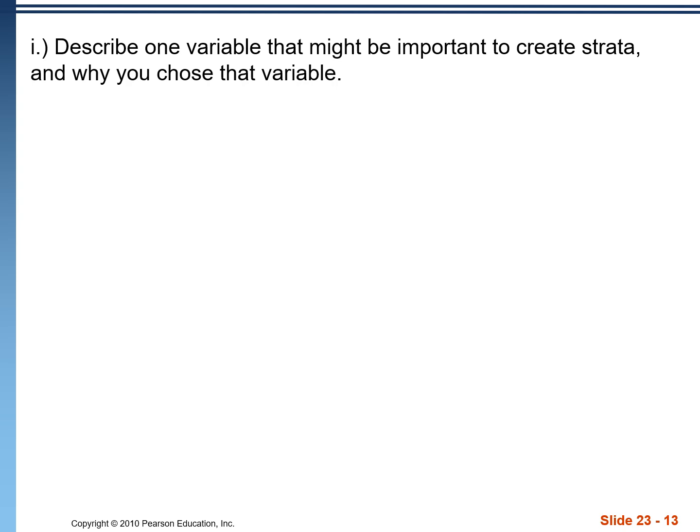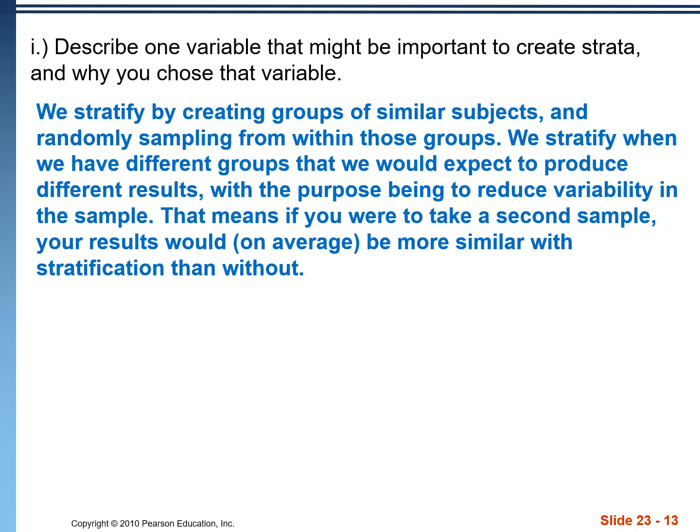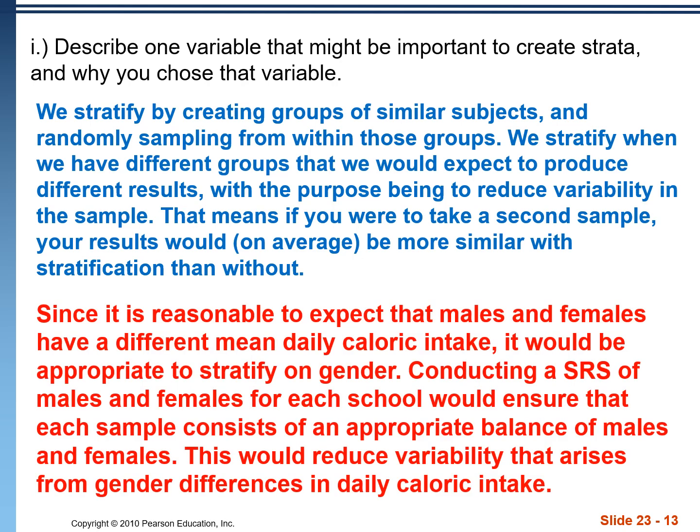Part I: describe a variable that might be important to create strata and why we chose that variable. A good thing to stratify on would be gender. We stratify to create groups of similar subjects — we group all the males together and all the females together. We then randomly sample within those two groups. The reason we stratify is because we expect those groups to produce different results; we would probably expect males to eat more than females. The purpose is to reduce variability in the sample — results would be more similar across repeated samples with stratification than without. So our answer would be: it's reasonable to expect that males and females have a different mean daily caloric intake, so it would be appropriate to stratify on gender. Conduct a simple random sample of males and females for each school, which ensures each sample has an appropriate balance of genders and reduces variability arising from gender differences in daily caloric intake.